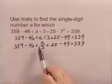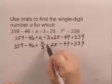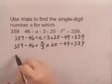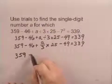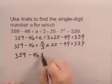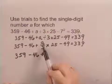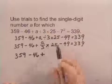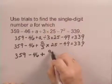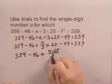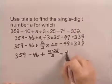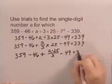Looking through here, I have an operation of multiplication. So that's the next operation I'll do. Copying, I have 359 minus 46 plus, and now I have A over 3 times 25. That will give me A times 25 over 3 minus 49 equals 339.